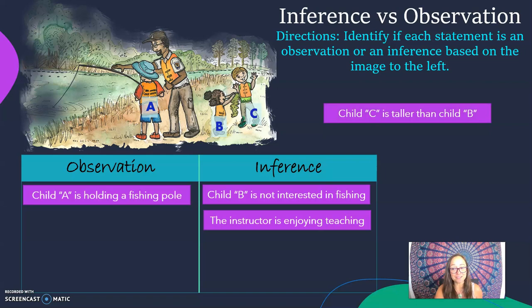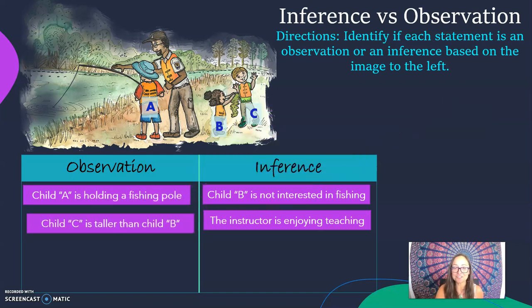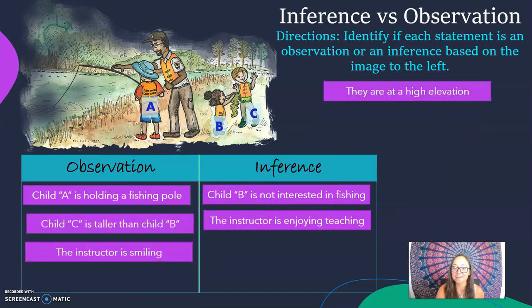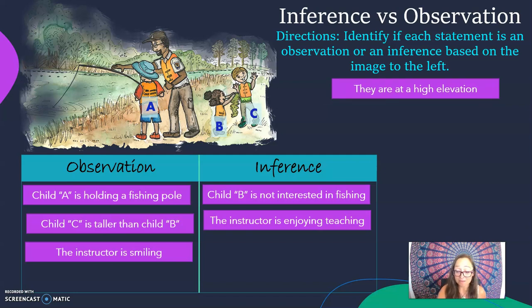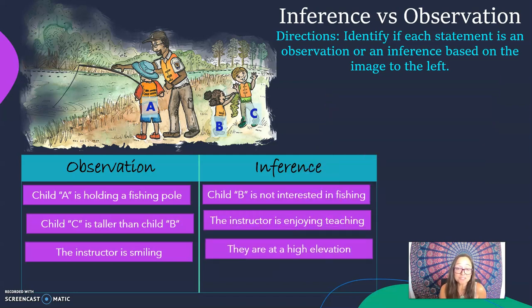Child C is taller than child B. Yeah, that's an observation, you can directly see that. The instructor is smiling, also an observation you can directly see that. They are at a high elevation. Now this is where you might use your prior knowledge of like, when I've seen lakes before surrounded by trees it's usually in a mountain setting which would put it at a higher elevation. But unless we have the tools to measure the elevation in the picture, we don't know for certain.